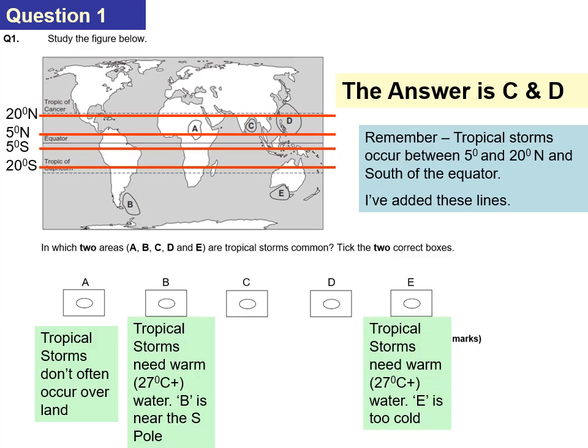The answer was C and D — let's go through these and rule out the other ones. Tropical storms don't often occur over land, and if they do they will eventually lose their energy; they don't start to form over land either. It's not B because B, in the bottom left of the map, is near the Antarctic so the sea is going to be cold, and it needs 27 degrees Celsius or above for a tropical storm to happen.